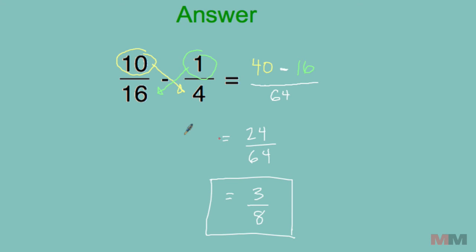Here is the solution. Sixteen times four, that's 64. Start with the top left, 10 times four, put that result there, it's 40, minus 1 times 16, which is 16. Forty minus 16 that turns into 24 over 64. Both of these numbers you can simplify by dividing by the greatest common factor, which is eight. It then simplifies to three eighths.